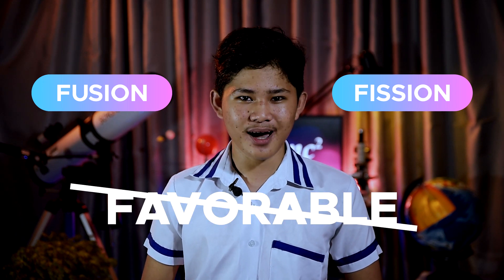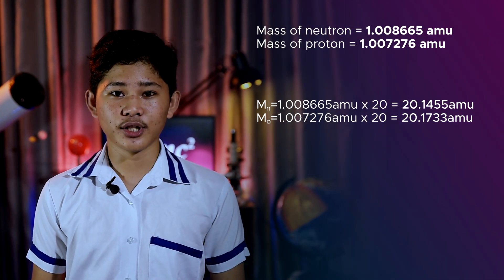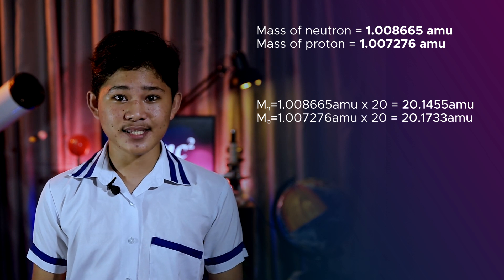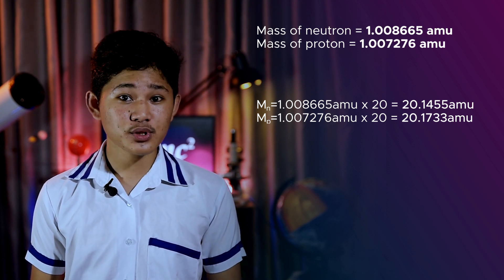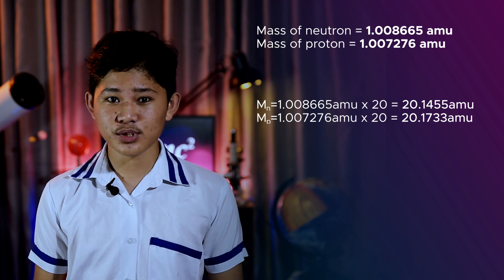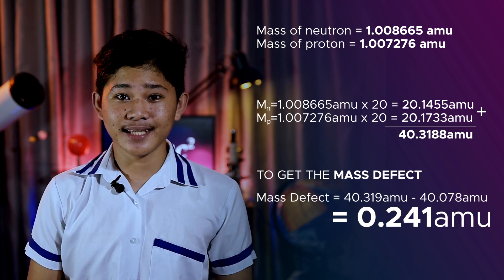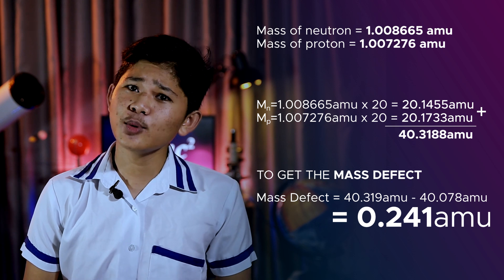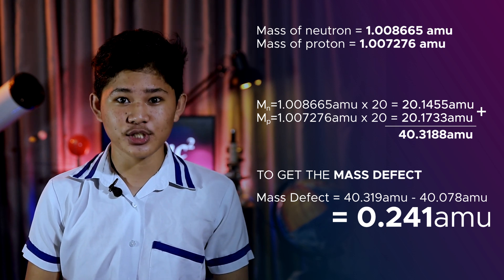That is why it is important to know the nuclear binding force between the nucleons to ascertain whether the fusion or fission of the particles is favorable or not. Let's take for example the atom calcium with atomic mass 40.078 atomic mass units, or AMU. To compute the sum of the masses of the constituent parts, multiply the number of neutrons by the mass of one neutron, multiply the number of protons by the mass of one proton, then add the products. Let's subtract the actual mass, which is always lesser, from the total mass of its constituent parts.